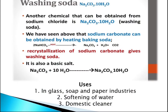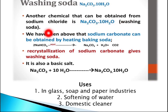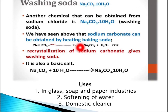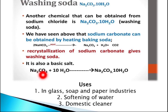Washing soda is Na2CO3·10H2O and can also be obtained from sodium chloride. Sodium carbonate is obtained by heating baking soda (NaHCO3), which decomposes into Na2CO3, H2O, and CO2. Recrystallization of sodium carbonate gives washing soda — when Na2CO3 combines with ten molecules of water, it forms Na2CO3·10H2O.